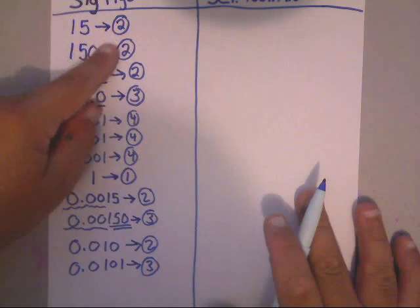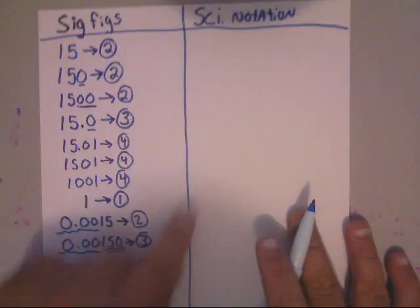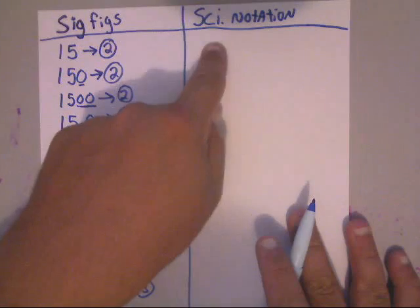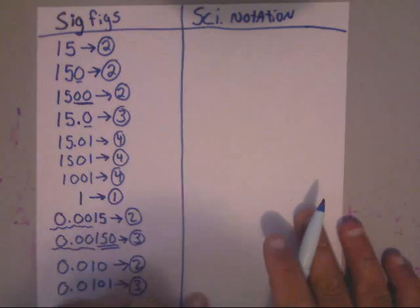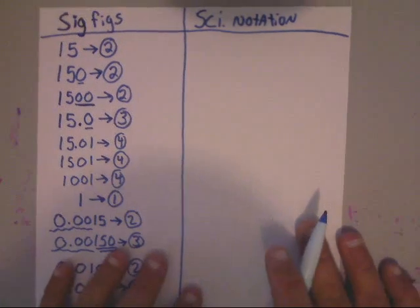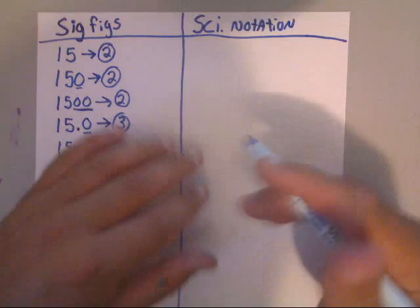Now let's look at scientific notation. When you do scientific notation, these significant figures become important. You need to be able to tell the number of sig figs to be able to write scientific notation correctly.